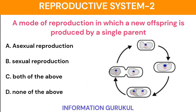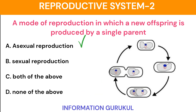A mode of reproduction in which a new offspring is produced by a single parent is called asexual reproduction.